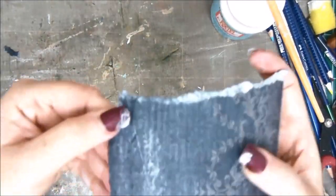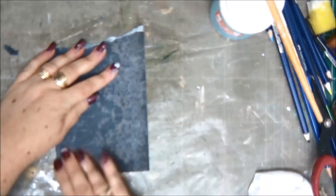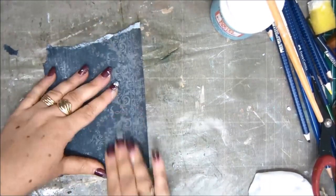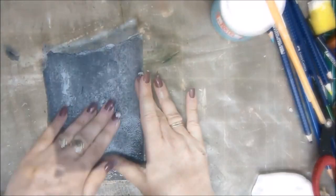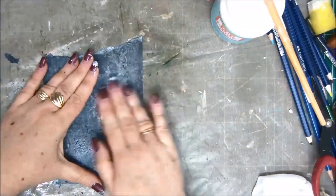After a while you see that the top layer of the paper starts to crumble into little crumbs while you rub your hands on the paper. Keep wetting it until this happens.